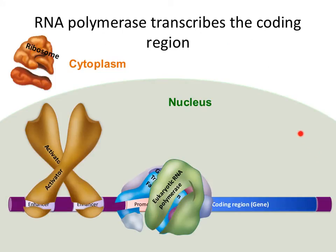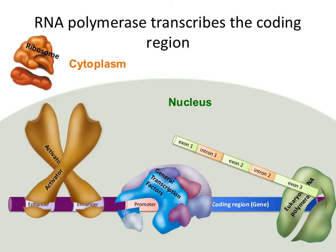Transcription in eukaryotes happens inside the nucleus. Once all the transcription factors are in the right place and bound to the promoter, RNA polymerase can bind to that complex of transcription factors and start transcription. Once the RNA polymerase has completed transcribing the coding region, this is the resulting RNA transcript.